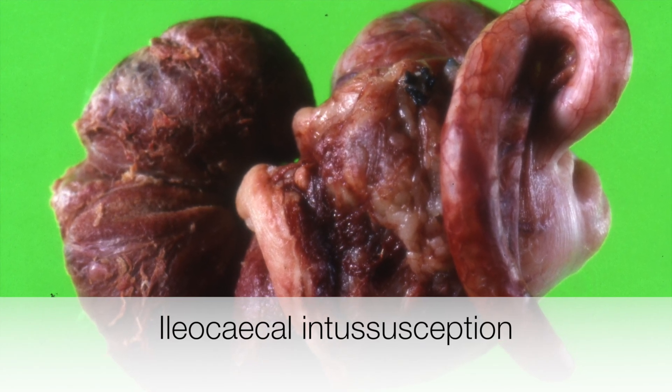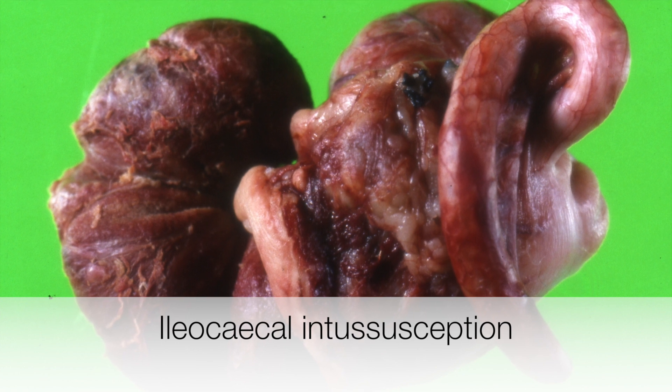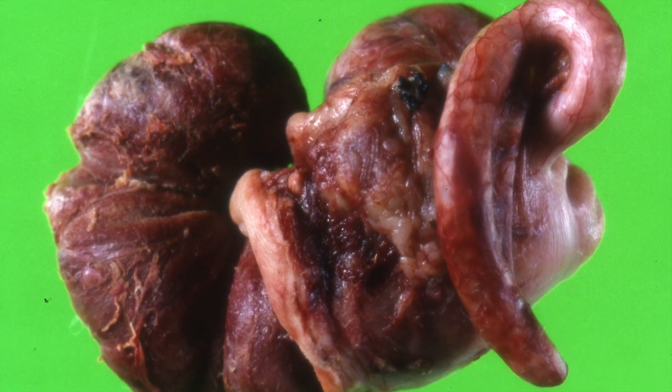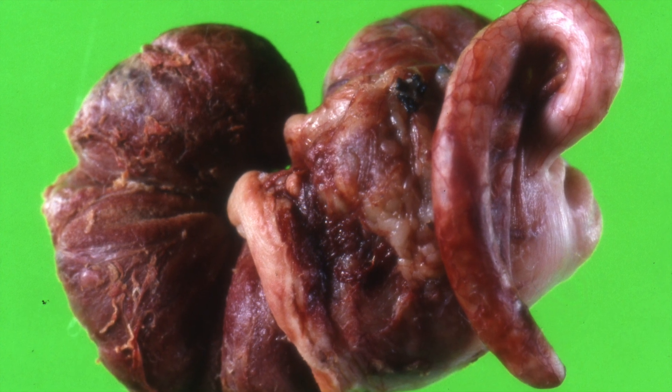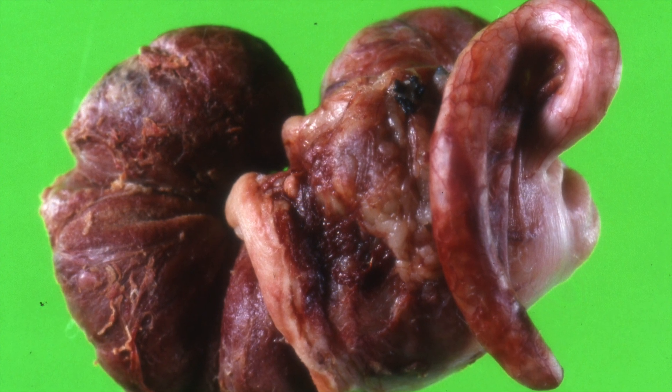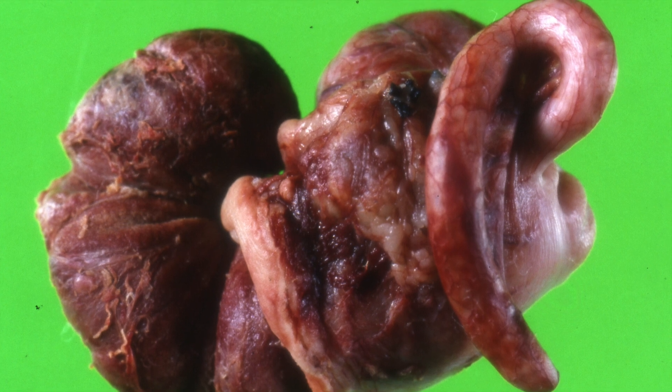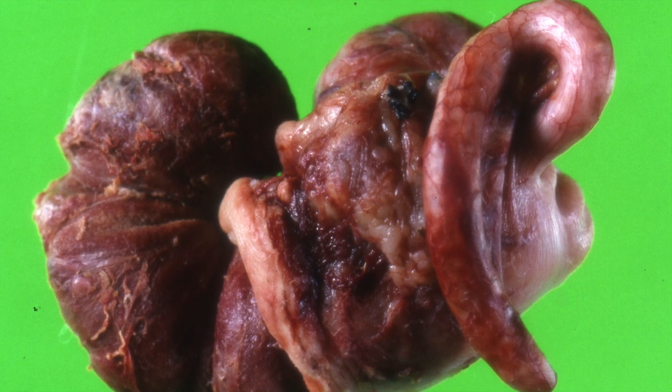On the left is the congested ileum, and on the right is the cecum into which it has been forced. In front of it, of course, is the appendix.